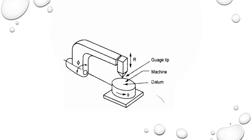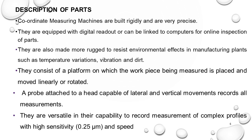This is one type of measuring machine — you can see the X datum point, the machine and gauge tip. This R means it can go up and down, so X, Y, and rotation — everything is possible. Coordinate measuring machines are built rigidly and very precisely, and they are equipped with a digital readout or can be linked to a computer for online inspection of parts.